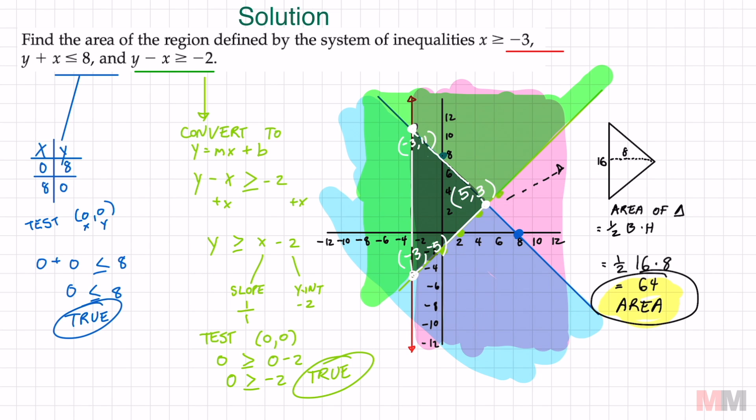To determine the dimensions of that triangle you just have to read the points. This is 11 and this is negative five so the total distance of that is going to be 16.